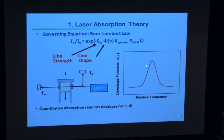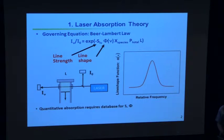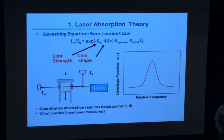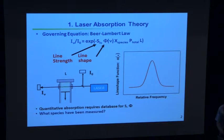We may need to study the line shape function — for example, measure collision broadening — and treat those as known before we proceed. We can't rely on HITRAN for that because it doesn't have high-temperature broadening information.